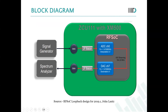The ADC output is streaming at 184.32 MHz and going to the DAC block. From there, we are getting the analog output captured at the spectrum analyzer. For this design, we are giving a sinusoidal signal at a frequency of 135 MHz with a power of minus 10 dBm.